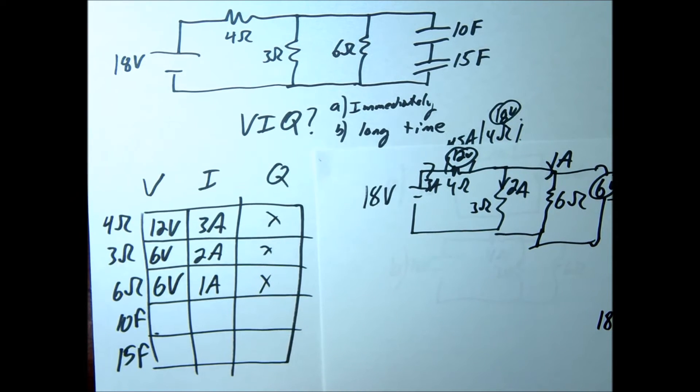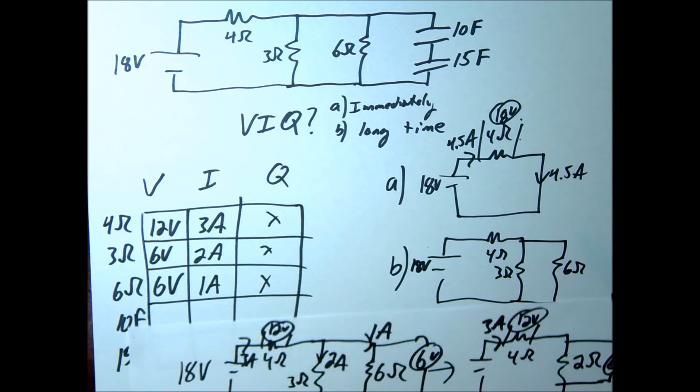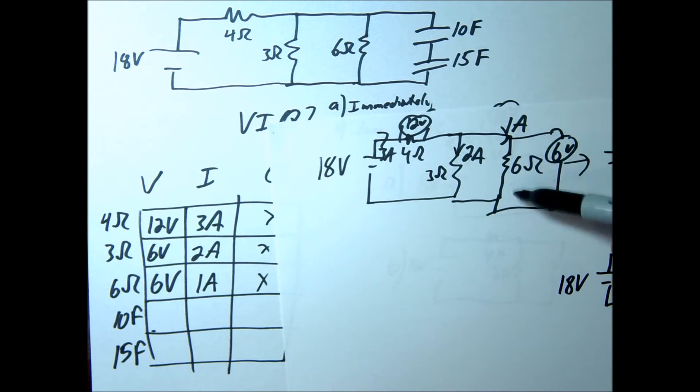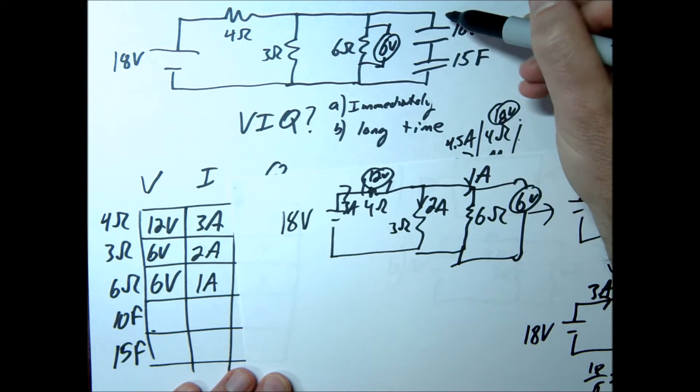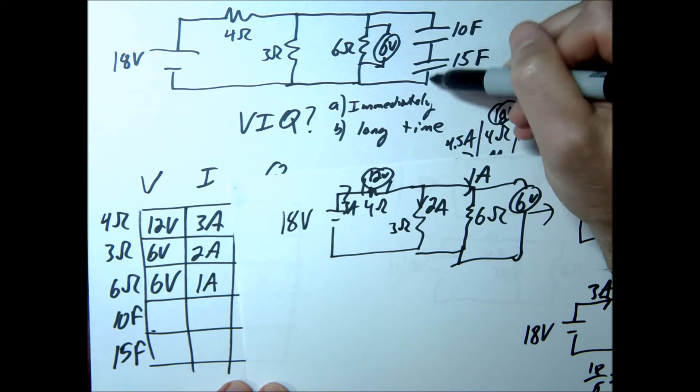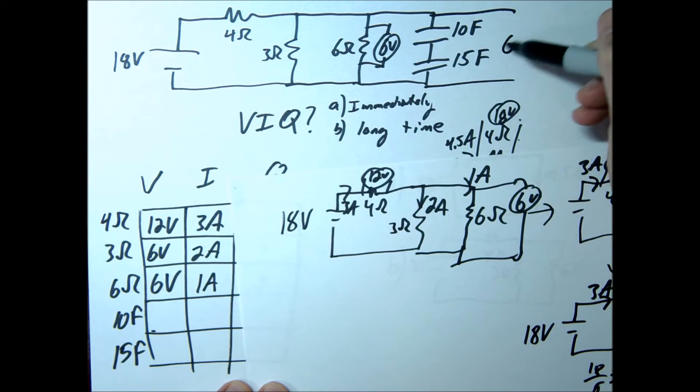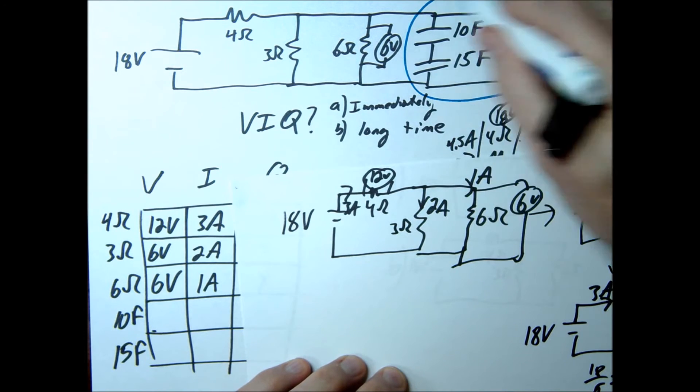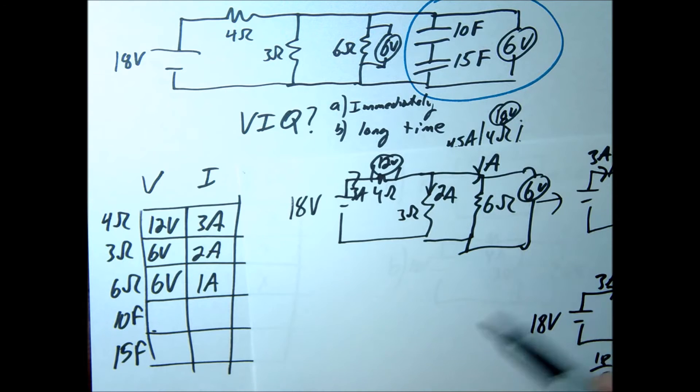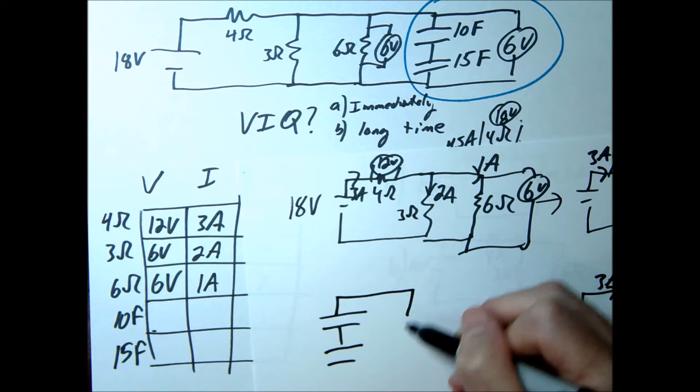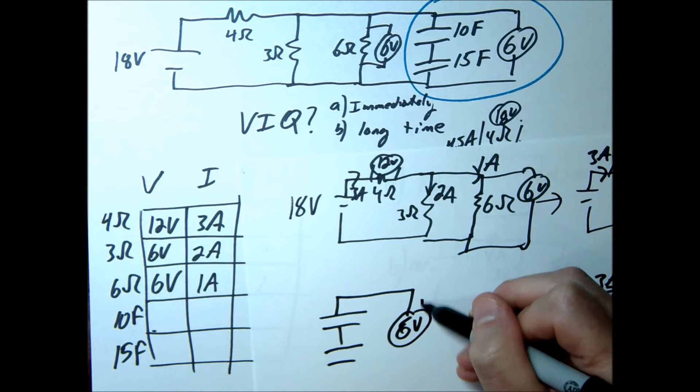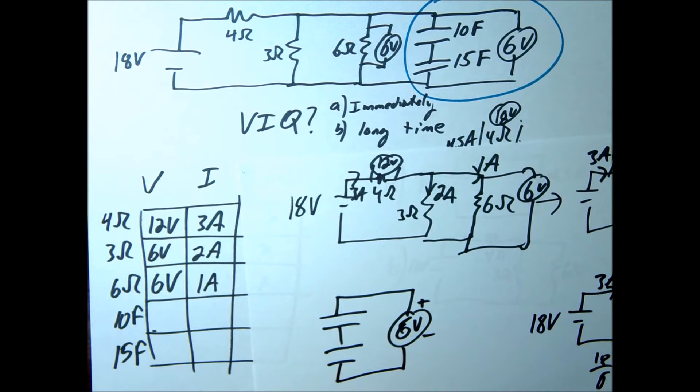That brings us to the last part of the problem. So notice this right here, this was 6, this is 6 volts here, which means across these two capacitors in series we also have 6 volts. In fact, we could just take this little piece right here and pull this to the side and say, all right, I have 6 volts here, my two capacitors hooked up to a 6 volt power supply voltage source. You could think of it like that.